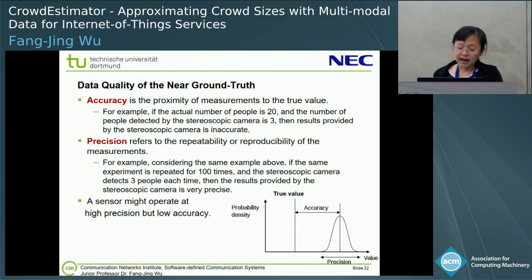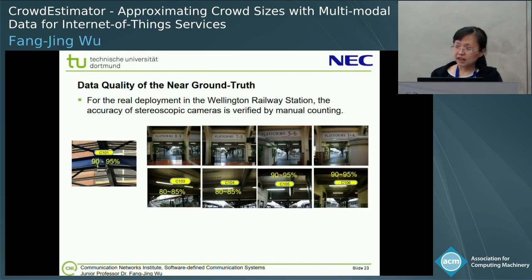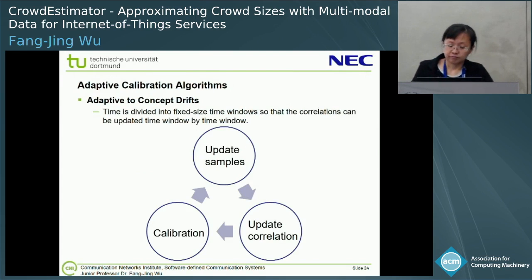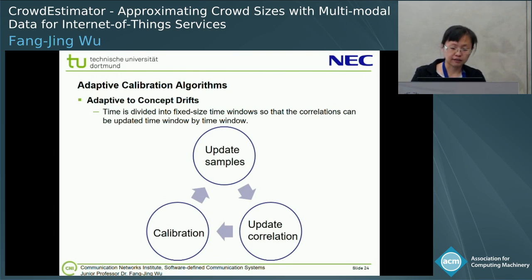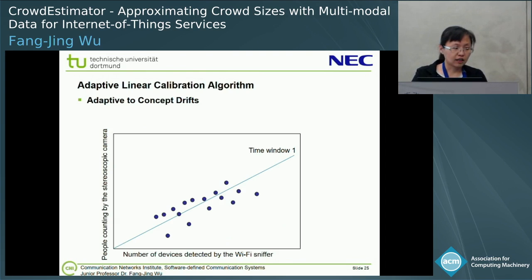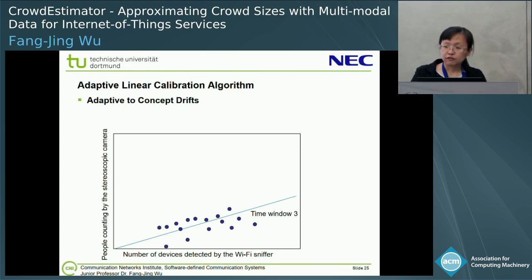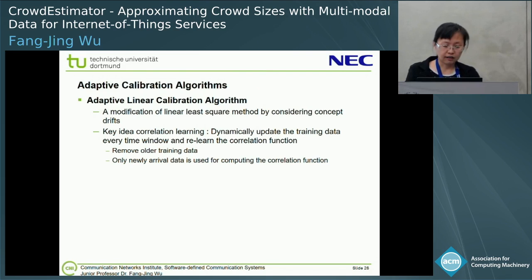Based on this concept, we verify our idea in the pilot study. In our system, we propose an adaptive collaboration algorithm. The idea is we divide time into multiple fixed-size time windows, so we can update the sample and update the correlation between the two data modalities, and apply the correlation to multiple sensing zones. For each time window, we can calculate the correlation and apply it in different sensing zones.